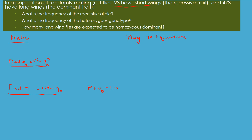Let's write out the equations — it's good practice. Start with the Hardy-Weinberg: p² + 2pq + q² = 1. For our alleles: short wing is recessive (little w, little w), and long wing is dominant (big W). So genotypes are big W big W (homozygous dominant), big W little w (heterozygous), and little w little w (homozygous recessive, q²).